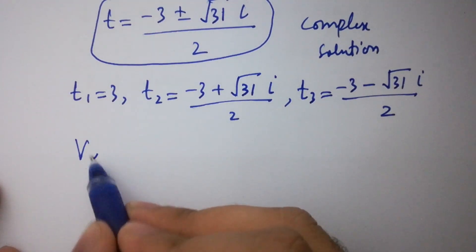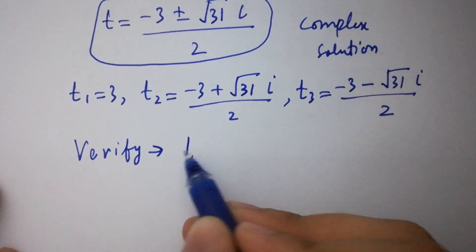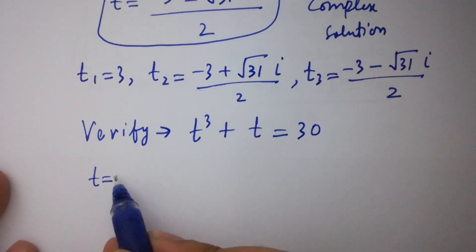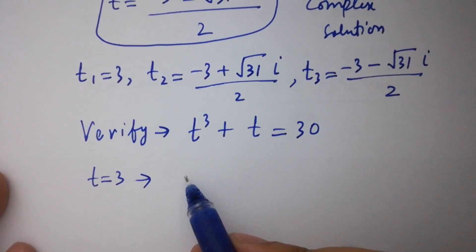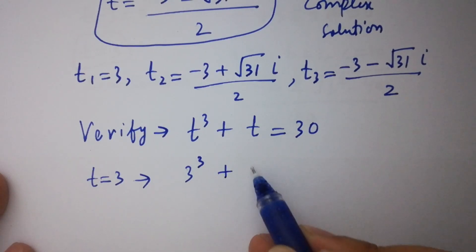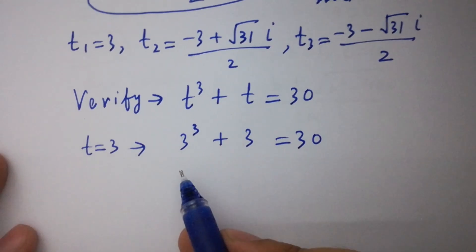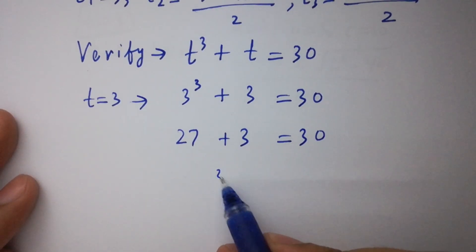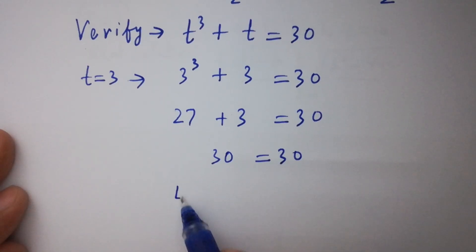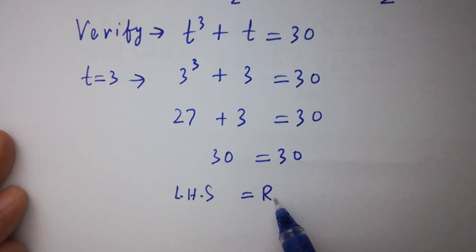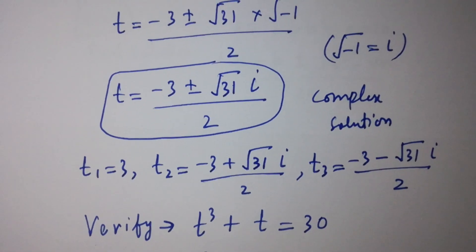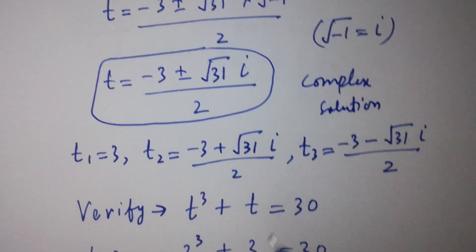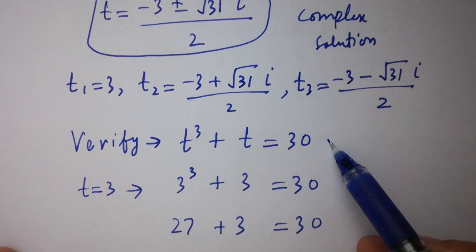In the last step I am going to verify: t cube plus t equal to 30. Put the value of t which is 3: 3 cube plus 3 equal to 30. 3 times 3 is 9, 9 times 3 is 27, plus 3 equal to 30. 27 plus 3 is 30, equal to 30. Left hand side equal to right hand side, which shows the value of t equal to 3. Also, the complex solutions t2 and t3 satisfy the equation t cube plus t equal to 30.